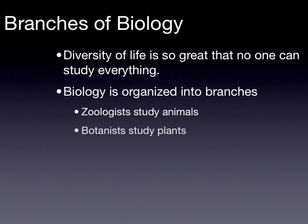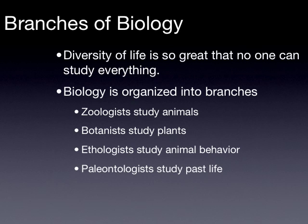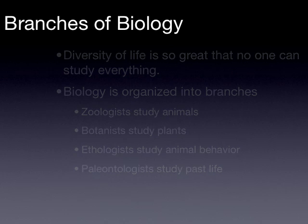Zoologists study animals. Botanists, on the other hand, study plants. Ethologists study animal behavior. So if you were interested in learning about the specific behavior or mating patterns of humpback whales, or perhaps the feeding habits of a particular type of fish, you would become an ethologist of that particular animal. Whereas a paleontologist, which I'm sure is a word you're familiar with, studies past life — they look at fossil records, bones and fossils, to learn about plants and animals that existed thousands, if not millions, of years ago.